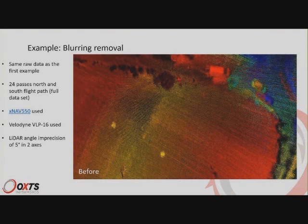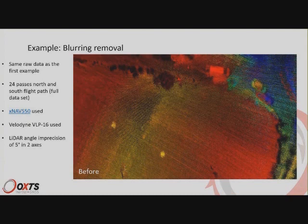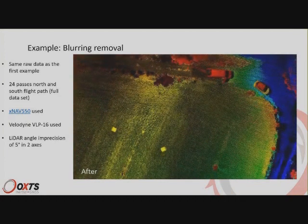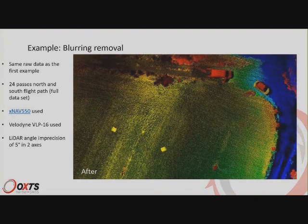Now we can see the full dataset — the previous view used a reflectivity filter showing only highly reflective objects such as the targets. This is the ordinary point cloud. You can see there's a van and a car, both very blurry images almost merging into two images — this is before bore sighting, and the point cloud is pretty much unusable for just about any application. After bore sighting, we have one car very clearly, one van very clearly with features such as a window and a door, square targets, and we can even make out a road and trees.